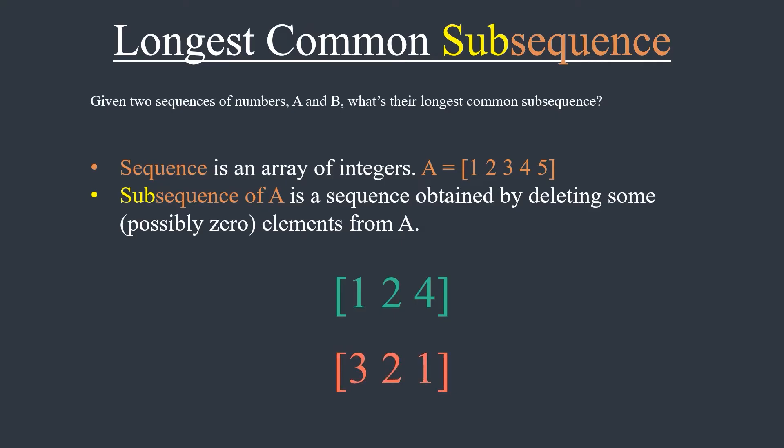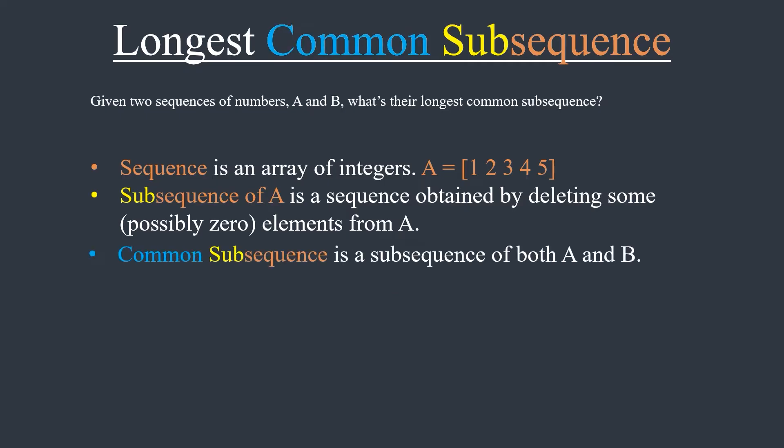What about common? We say that the subsequence is common for two arrays if it's a subsequence of both. Imagine that we have two integer arrays A equals 1, 2, 3, 4 and B equals 2, 3, 4, 5.